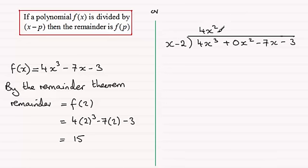all we do is say what do we multiply x by to give us 4x³ and that has to be 4x². Multiply the 4x² with x minus 2. 4x² times x is 4x³. And then 4x² times minus 2 is minus 8x².